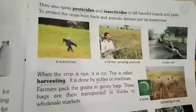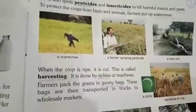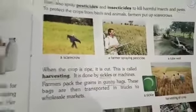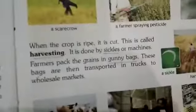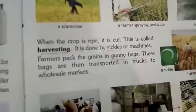When crops get ripe, it is time to cut the crop. Cutting crops when they are ripe is called harvesting. This cutting is done by machine or sickles. You can see the sickle in the picture.